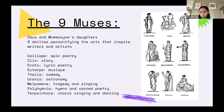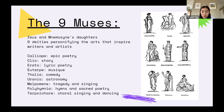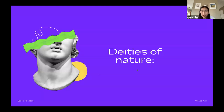As you can see on the right side of my PowerPoint, each Muse has her different attributes. For example, Clio — the muse of story — is holding a book. Urania, the muse of astronomy, has a globe in her hand. The same goes for all the other Muses.